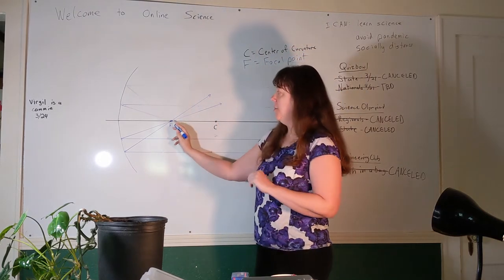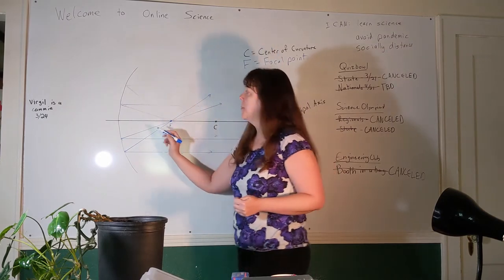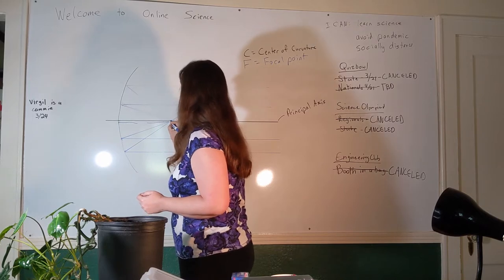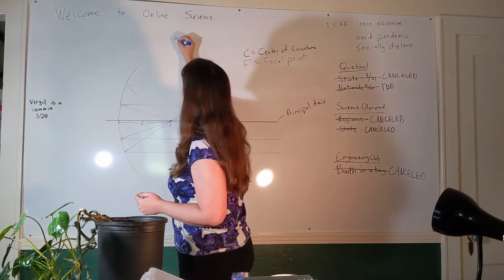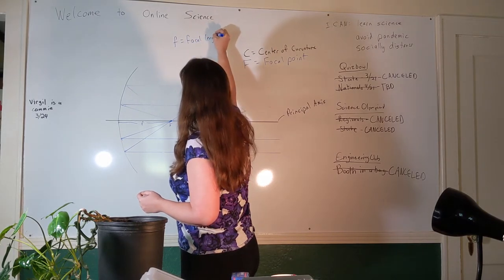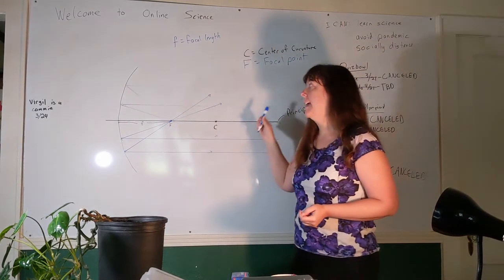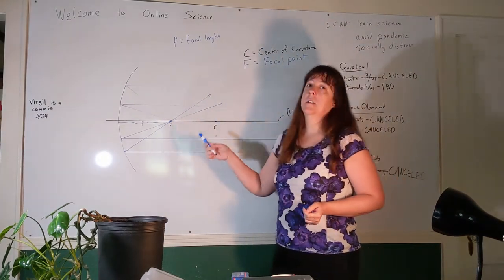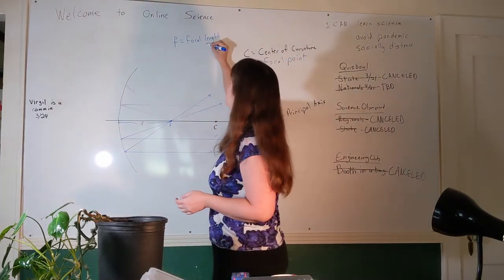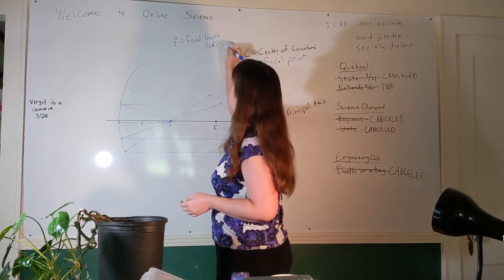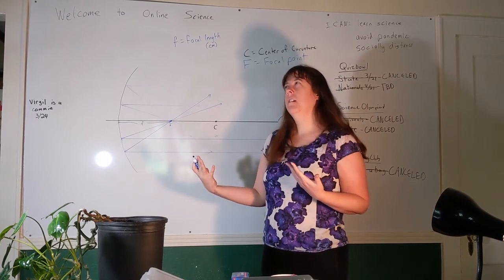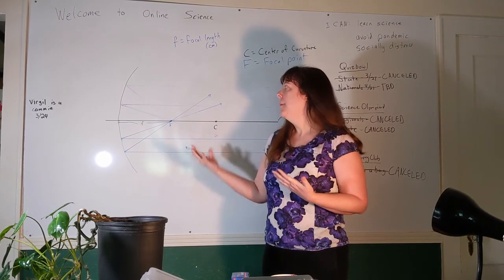The distance between the focal point and the mirror, measured along the principal axis, is the focal length. The symbol for the focal point is a capital F. The symbol for the focal length is a lowercase f. We're going to measure this in units of length — centimeters most commonly, but technically any unit of measurement. This is the thing that determines the images created by the mirror.